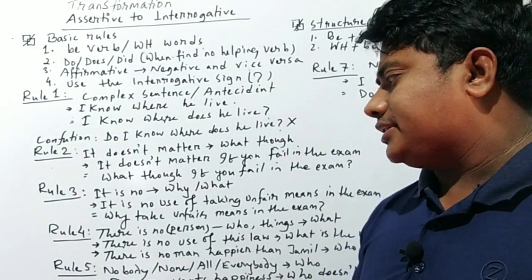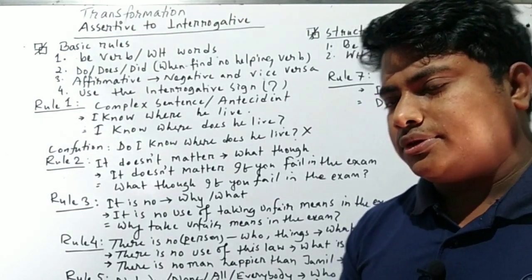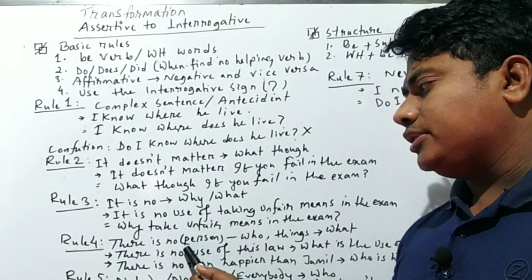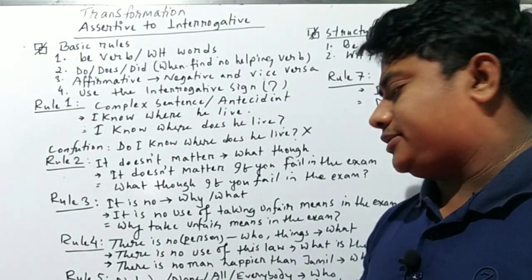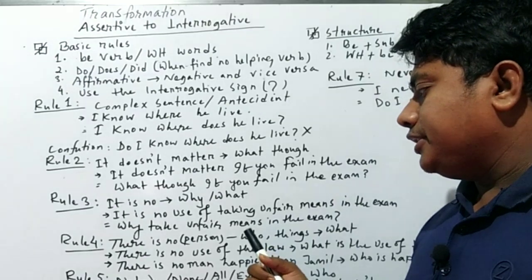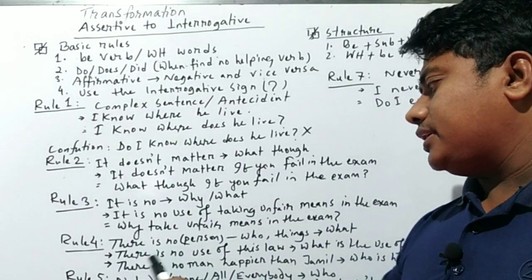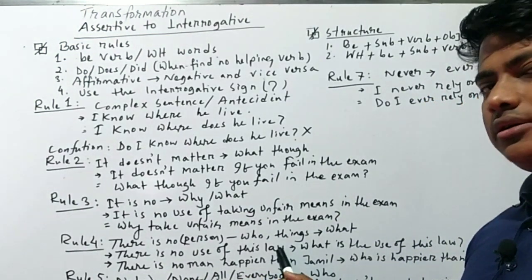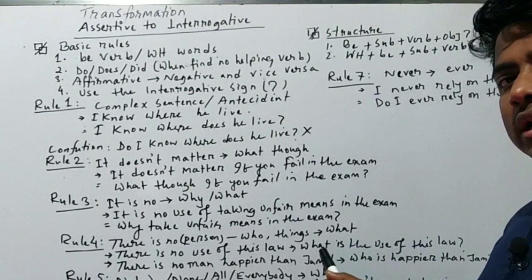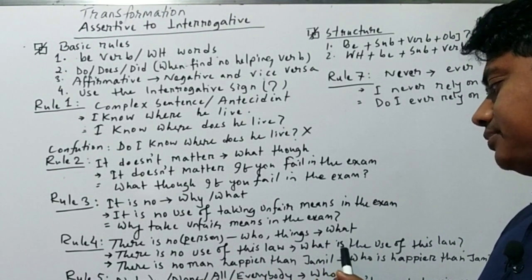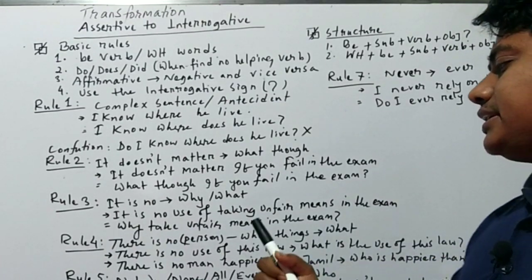Rule four is very common. When a sentence contains 'there is no,' if it indicates a person we use 'who,' and if it indicates a thing we use 'what.' For example: 'There is no use of this law.' Here 'there is no' is replaced with 'what,' and the B-verb 'is' is included: 'What is the use of this law?' — this is how we convert this type of sentence.